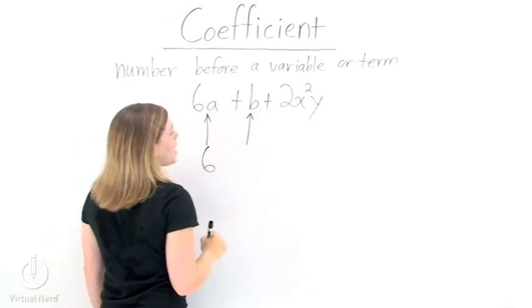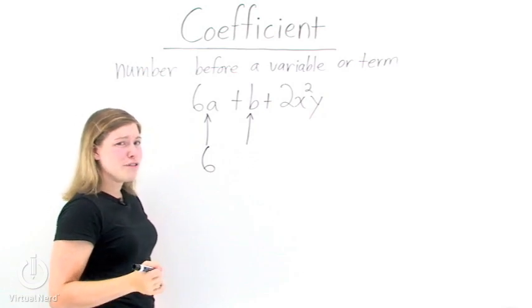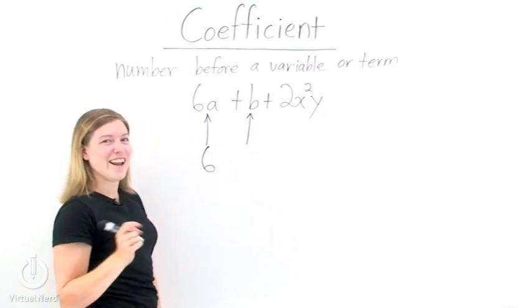If we look at b, we don't see a number. So what's our coefficient? 1, exactly.